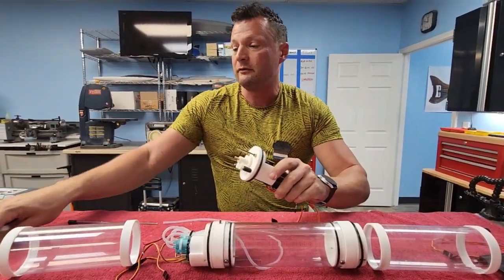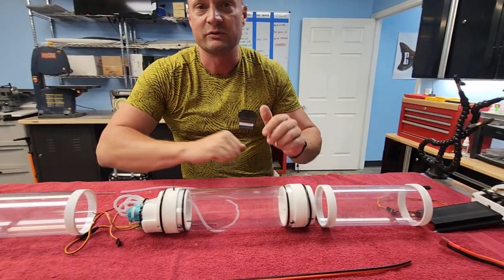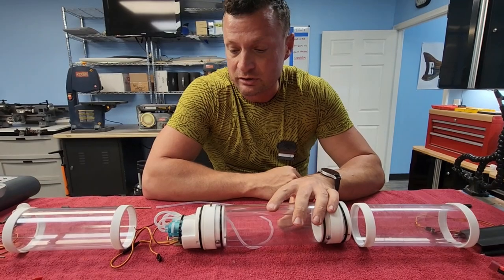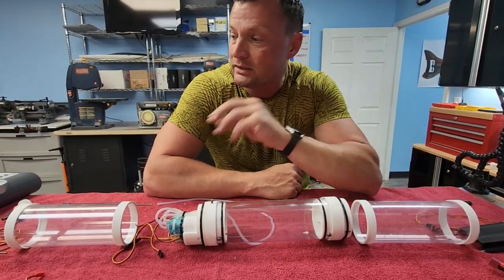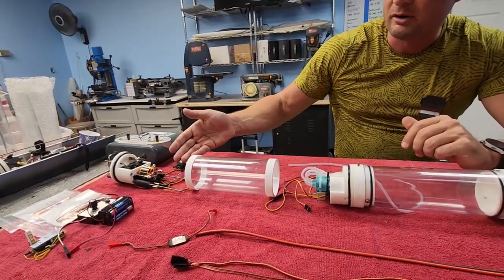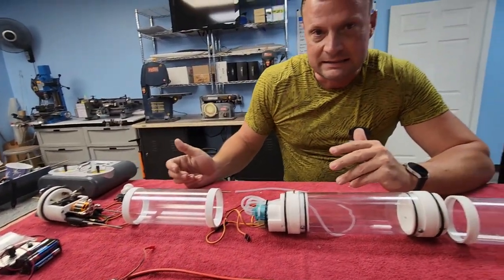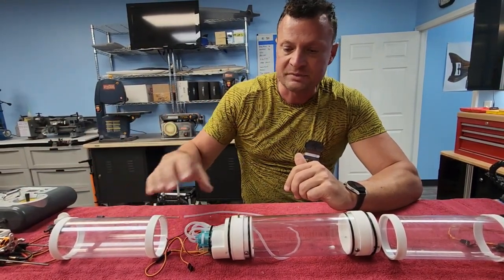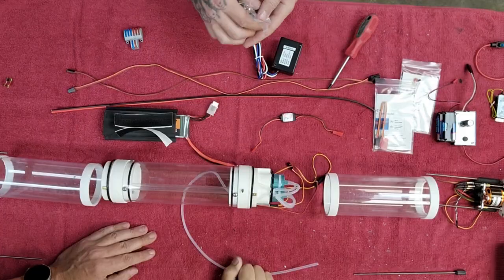So those are the main upgrades over the version 1 300 series watertight cylinder. The good news for anybody that did purchase the original version, obviously those work. There's nothing wrong with them. But if you like what you see here, these are all completely interchangeable. You can buy these. They fit perfectly in here. The holes should all line up. There shouldn't be any difference in that at all. If you wanted to swap out for the new end caps or pump bulkheads or anything like that.